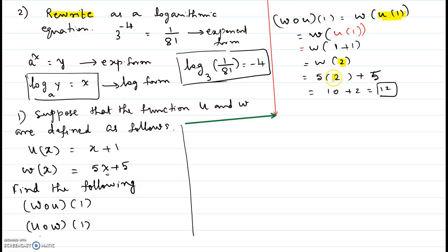So it's 5 times 2 plus 5, which is 10 plus 5 which is equal to 15.